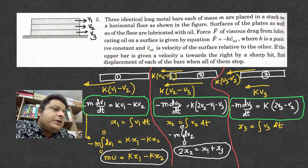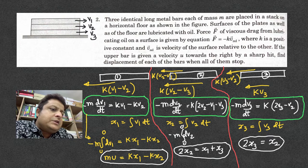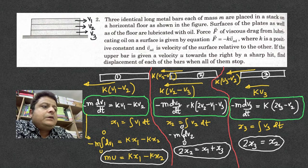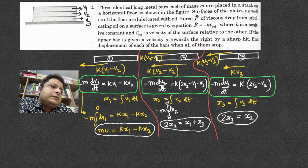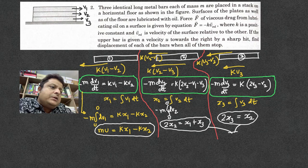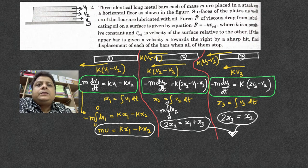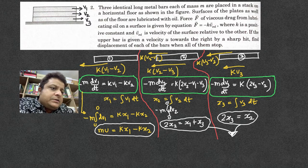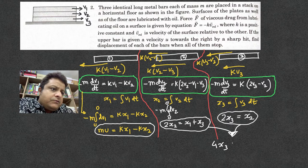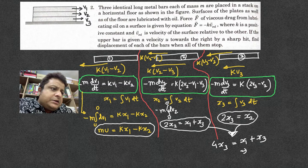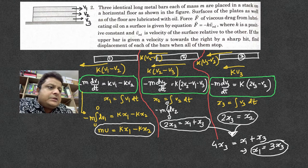Same way here you have 2x3 = x2. Now in the first equation, you know 2x3 = x2. These two equations you can combine. In terms of x1, x2 = 2x3, so 4x3 = x1 + x3. That means x1 = 3x3. So x1 = 3x3 and x2 = 2x3.